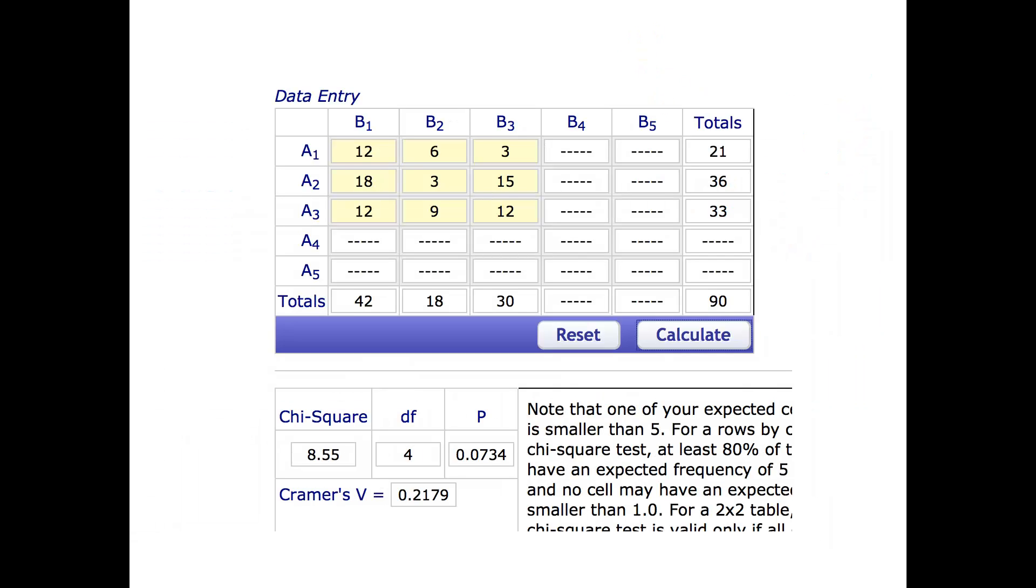I used VassarStats website to calculate chi-square, so I entered all my numbers here. Here's chi-square, I've got the right degrees of freedom, so chi-square is 8.55.